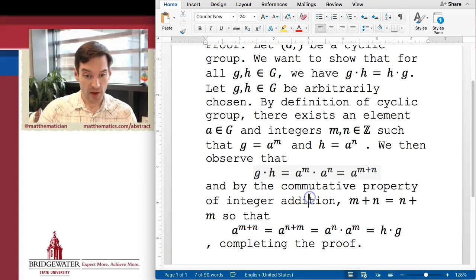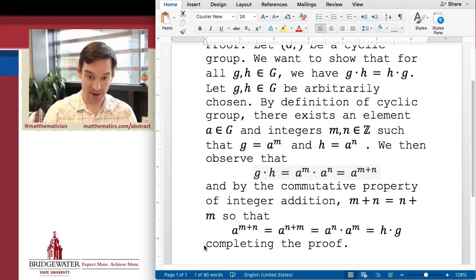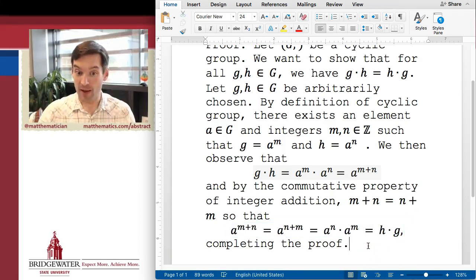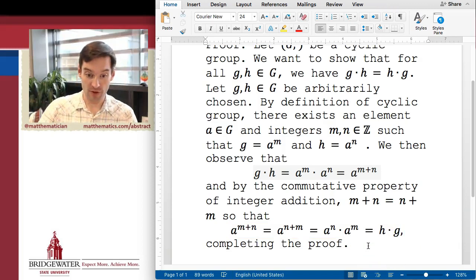By the way, this always sort of bugs me in my math writing, but notice how since this equation was part of a sentence before that had a comma, now the comma is sort of sitting by itself at the beginning of a line. We don't want that. So I'm going to take this comma and I'm going to put it here inside of my equation so that it's not beginning. We don't want to begin a line with punctuation.